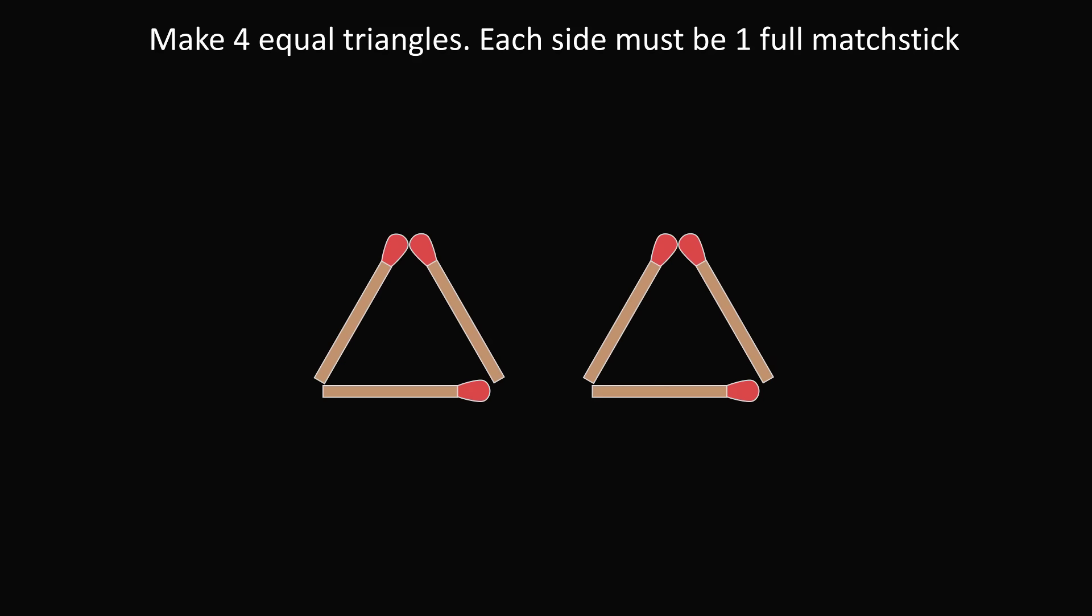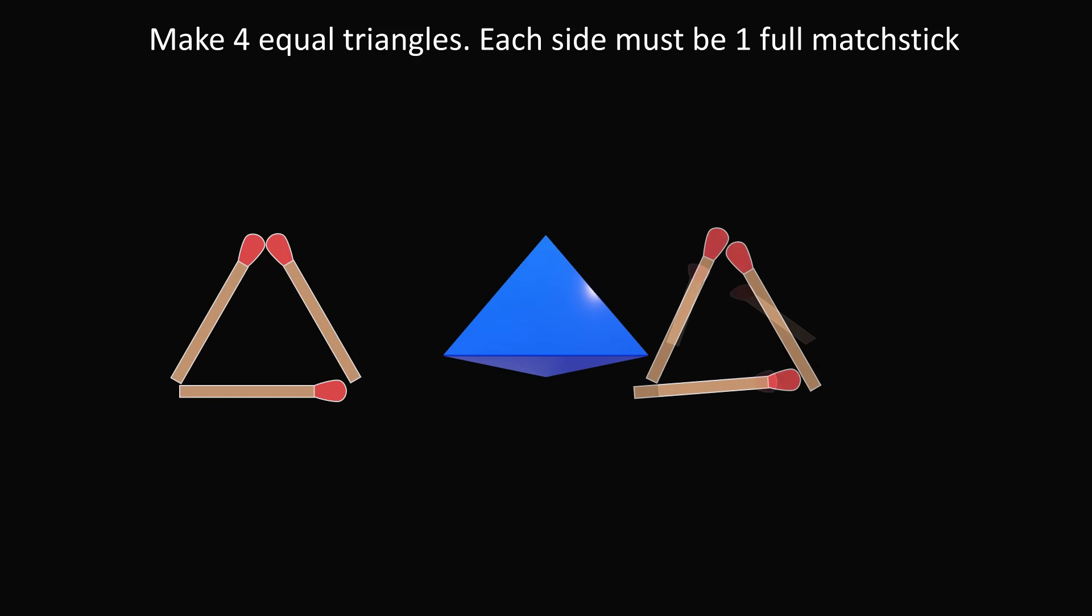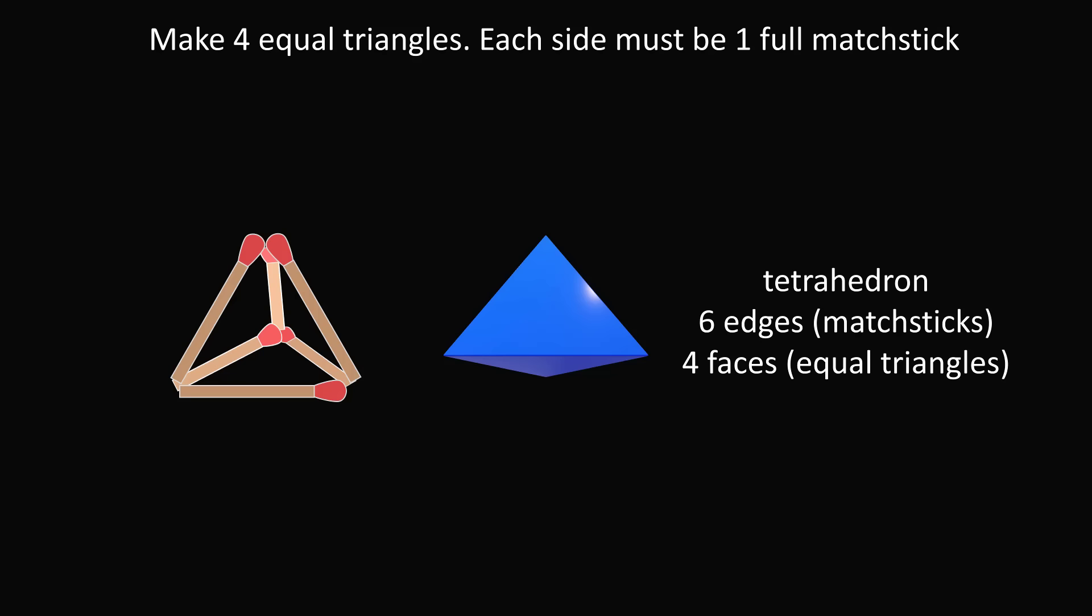The trick in this puzzle is not to think in 2 dimensions, but to think in 3 dimensions. Instead of just thinking about a flat triangle, let's imagine a 3-dimensional shape of a tetrahedron. So, how is this going to help us solve the problem? Let's form the matches into a tetrahedron. So, a tetrahedron will have exactly 6 edges. So, we can use the 6 matchsticks to form a tetrahedron. And a tetrahedron will have 4 faces. So, we've used the 6 matchsticks to make 4 equilateral triangles, which are the faces of the tetrahedron. And that's the incredible outside-the-box solution to this puzzle.